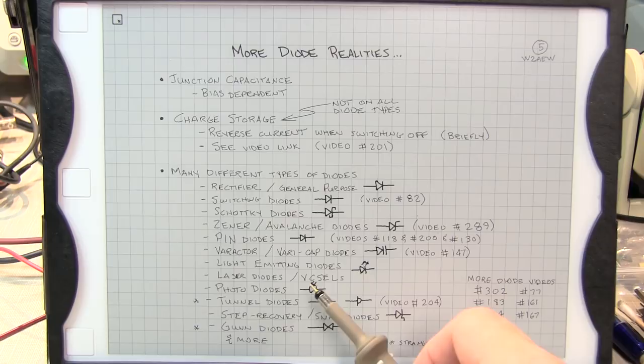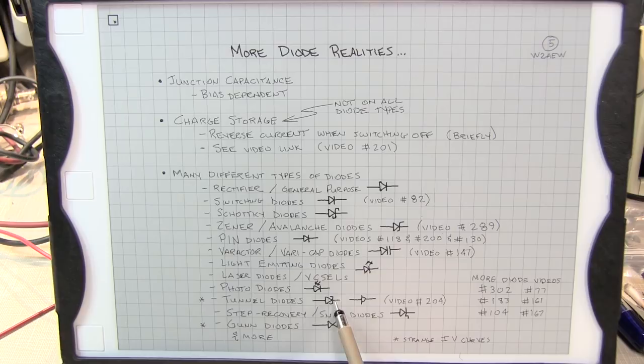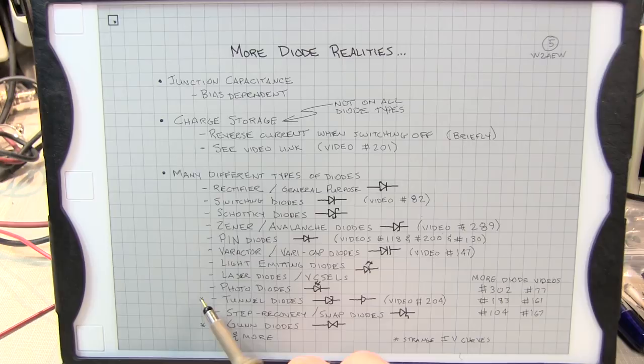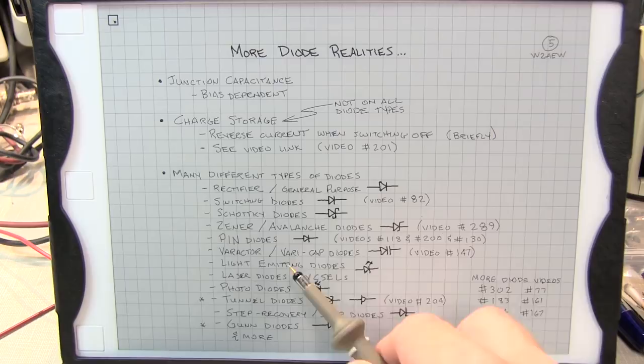Tunnel diodes are kind of unique. They've got a kind of a unique symbol here. Actually, you've seen two different symbols for tunnel diodes. And I've got a video on tunnel diodes, number 204, and they're kind of unique because they're bi-stable, meaning the IV characteristic has a little bit of a negative resistance to it. In fact, I've got an asterisk next to this because their IV characteristic of tunnel diodes is very different from all the other diodes we've been talking about.